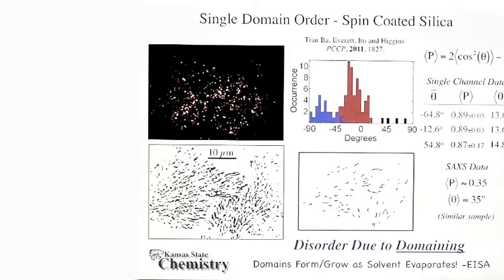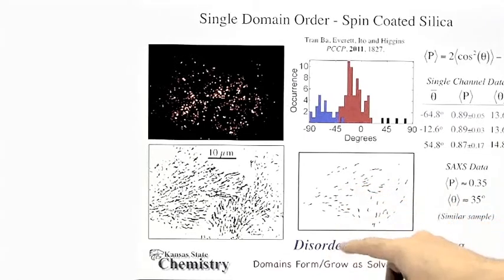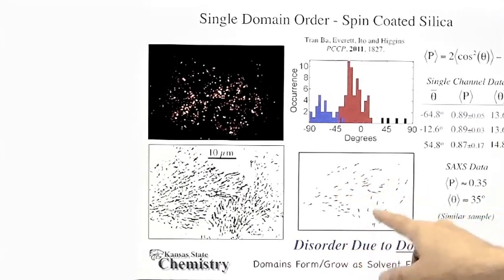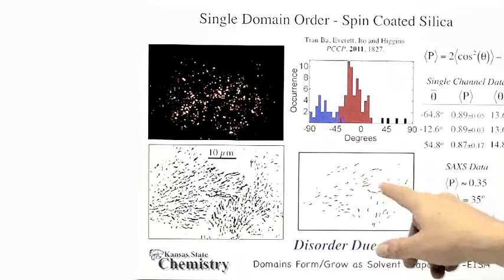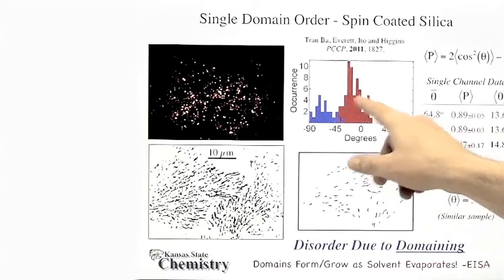Close inspection of these data reveals that this region of the sample is comprised of no fewer than three distinct domains. We've colored the trajectories associated with each domain as red, black, and blue lines. The histograms prepared from these trajectory data are shown above here again in red, blue, and black.